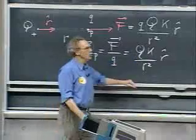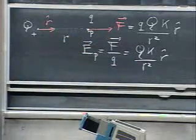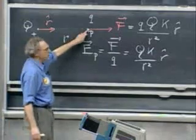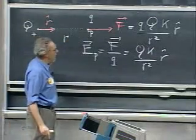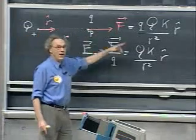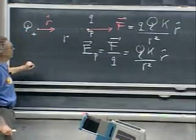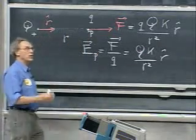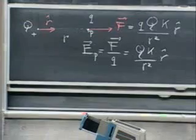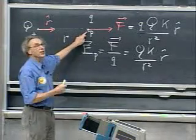By convention, if this is a positive test charge, we say the E field is away from Q if Q is positive. If Q is negative, then the force is in the other direction and therefore E is in the other direction. So we adopt the convention that the E field is always in the direction that the force is on a positive test charge.